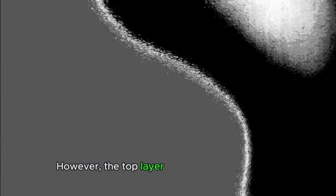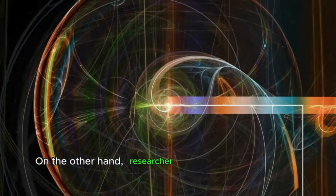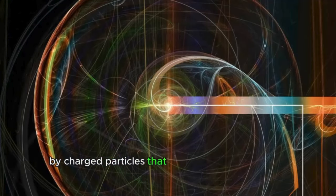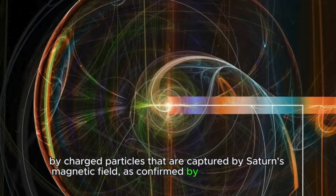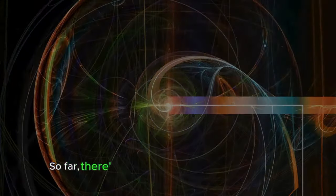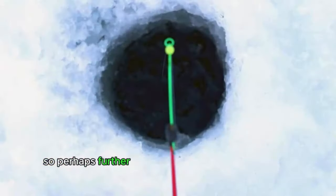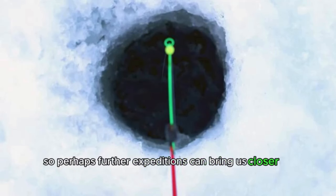However, the top layer of Mimas remains intact. On the other hand, researcher Carly Hubbit has pointed out that such strange temperatures may be caused by irradiation by charged particles that are captured by Saturn's magnetic field, as confirmed by data from Cassini. So far, there's no concrete answer to this question. So perhaps further expeditions can bring us closer to unraveling this temperature Pac-Man.